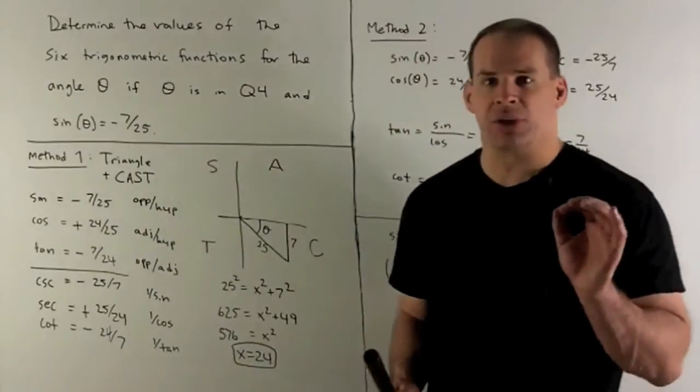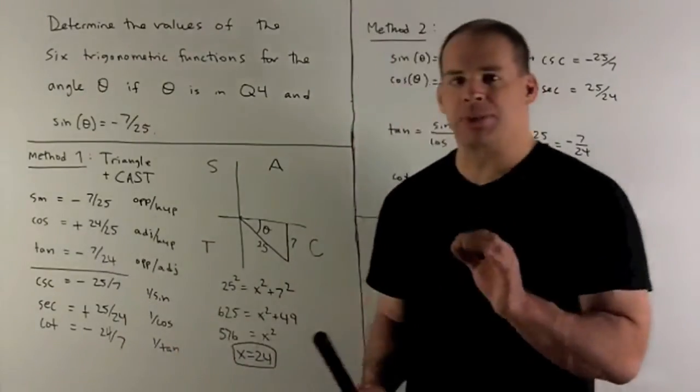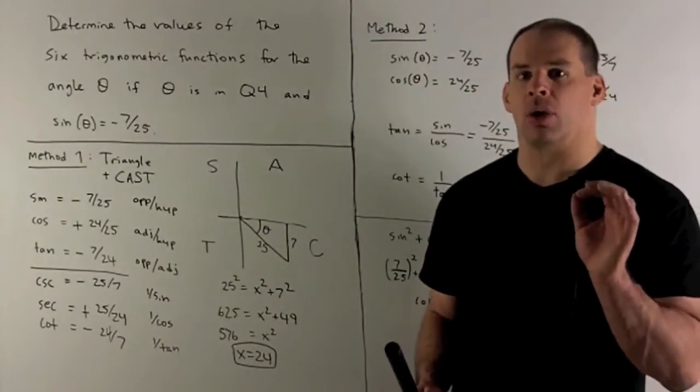Cosine, adjacent over hypotenuse, we get 24 over 25. And then tangent, opposite over adjacent, 7 over 24.